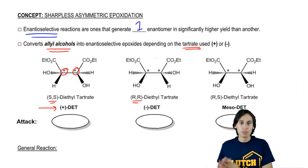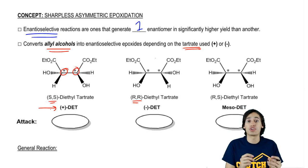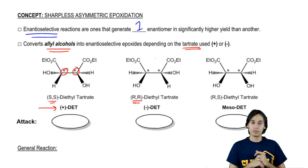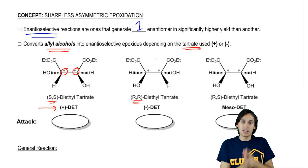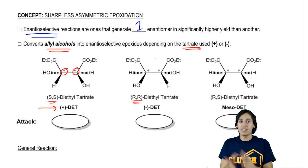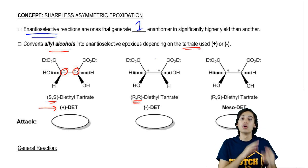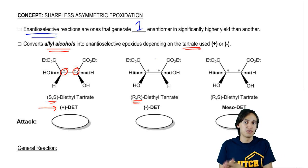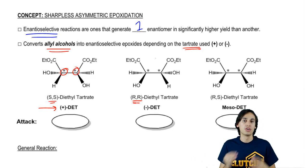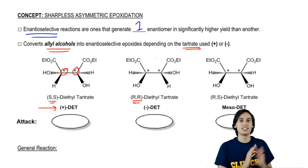Well, the enantiomer of that would mean that both chiral centers are opposite. So if you have an RR tartrate, that's going to be a negative rotation. And the reason is because remember that the enantiomer of any chiral center or of any chiral molecule will always have the opposite rotation but of the other configuration. So for example, if it was positive 20 degrees, then it would be a negative 20 degrees rotation with the negative DET.